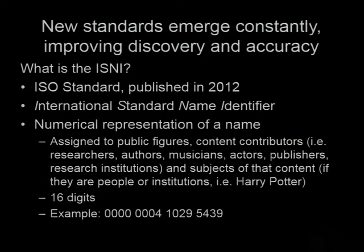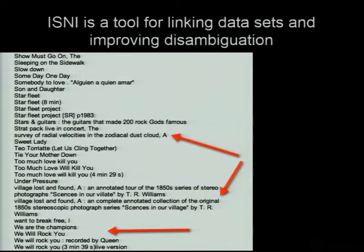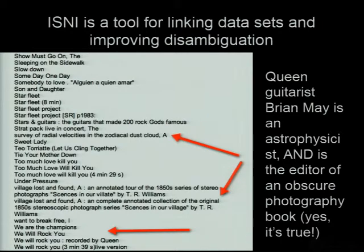There are always new standards in metadata. How many of you have heard of the ISNI? Laura Dawson has been talking about this a lot. It's a numerical identifier for a person's name or a place — it could even be a character like Harry Potter. It helps publishers distinguish between authors with the same name. For example: you probably know Brian May, the guitarist for Queen — is he the same guy who's an astrophysicist and the same guy who wrote a seminal article about stereoscopic images? Yes, it's the same guy. So who knew the guitarist for Queen was also a PhD in astrophysics and an expert on stereoscopic images?